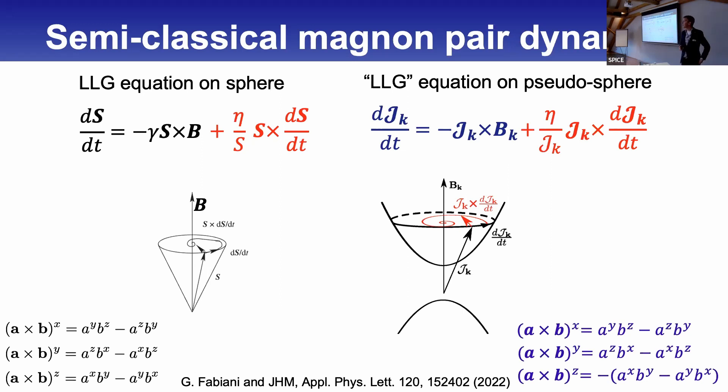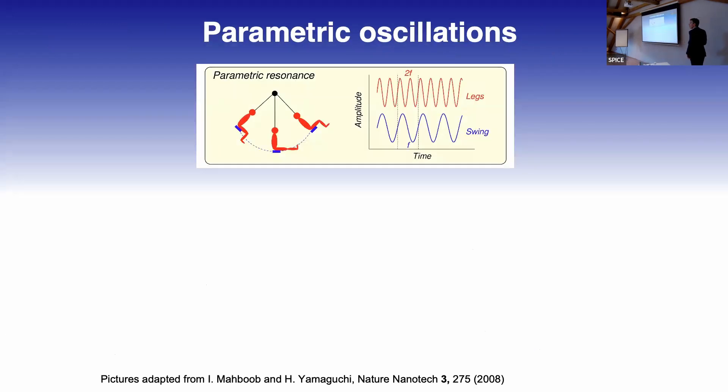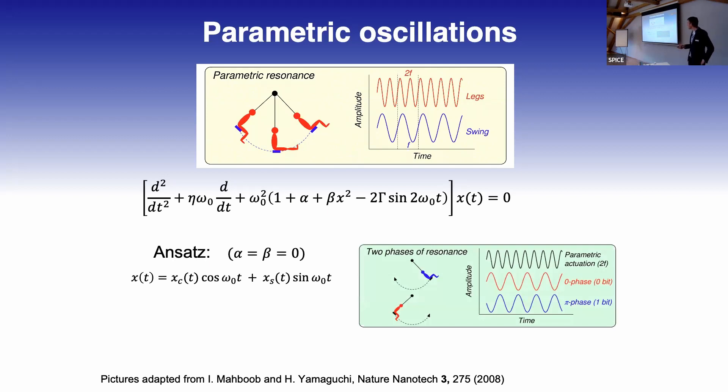Parametric excitation you know from the simple harmonic oscillator—you probably did this with your children or grandchildren. Your legs swing twice as often as the natural oscillation frequency of the swing. You can describe this with a simple pendulum equation with parametric driving. You can solve it in a rotating wave approximation where you have growing and decaying solutions depending on the driving.